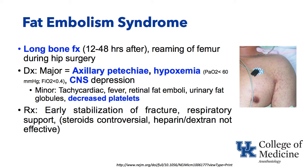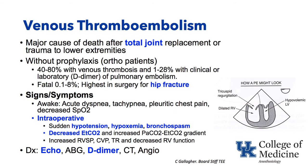Venous thromboembolism is a major cause of death after total joint replacement or trauma to the lower extremities. Orthopedic surgeons are very adamant about prophylaxis against thromboembolism in the perioperative period. Without prophylaxis, more than half can end up with a venous thrombosis. In some studies, up to a quarter develop clinical or laboratory D-dimer diagnosis of pulmonary embolism. It's fatal in a substantial number and is highest in surgery for hip fracture. Unless there's a major contraindication, prophylaxis with anticoagulants is indicated.